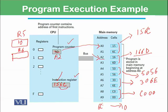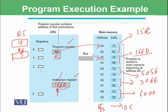Next, the instruction is fetched from A2, which is 166D. The instruction register now holds 166D. Again, 1 means load, 6 means load into register number 6, and 6D is the address in main memory. Suppose address 6D holds the value 5 — that value 5 will be loaded into register R6. The program counter is now incremented by 2, pointing to A4.